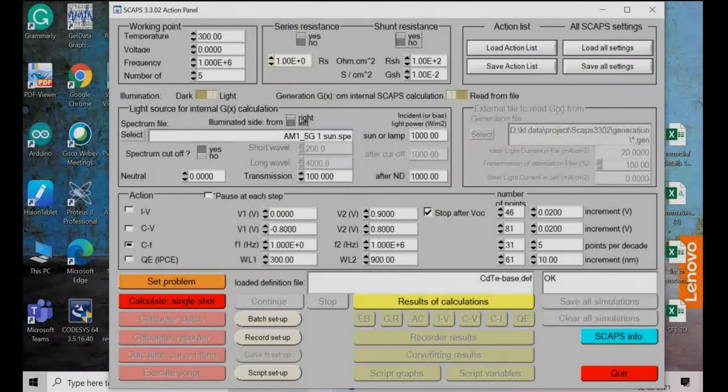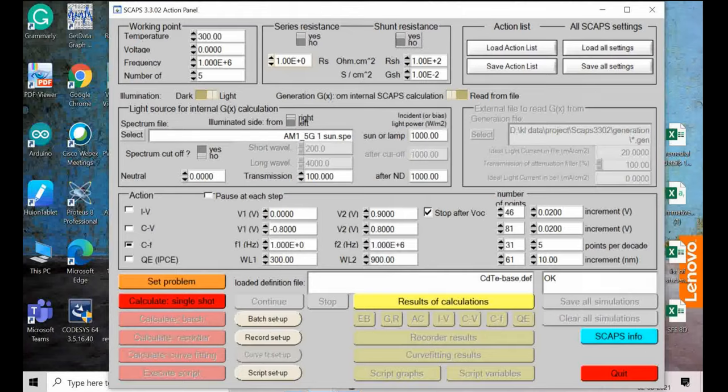Today we will see how to do AC simulation of solar cells, p-n junction devices. Basically AC simulation when I say that means frequency dependent performance analysis.